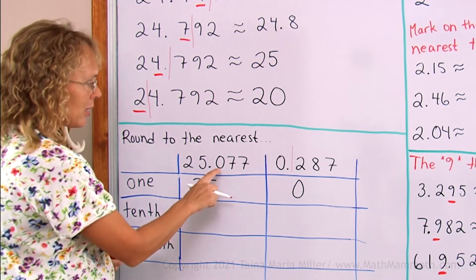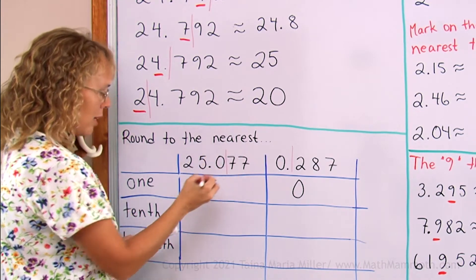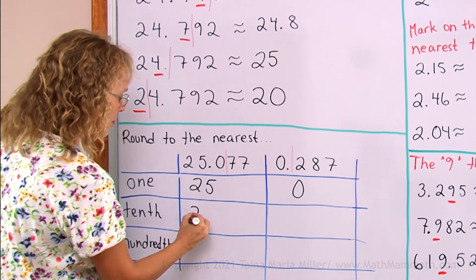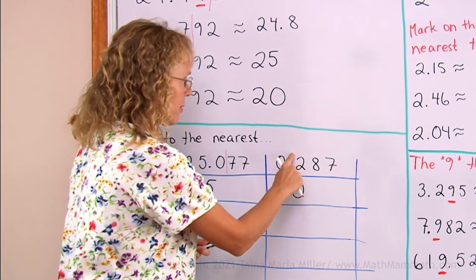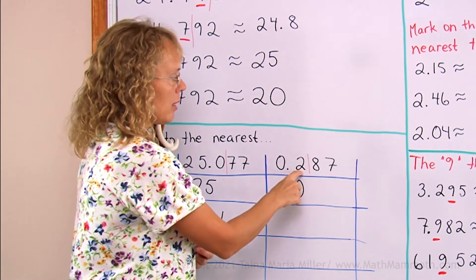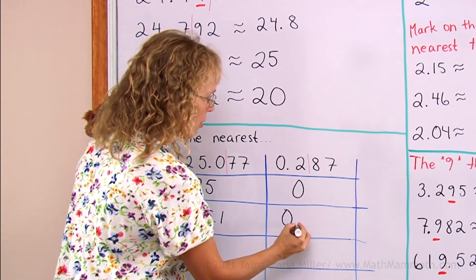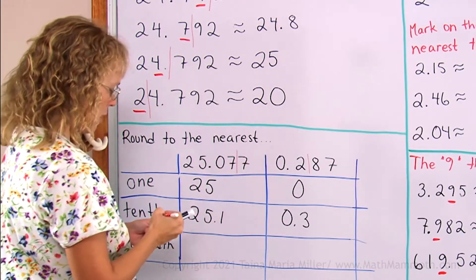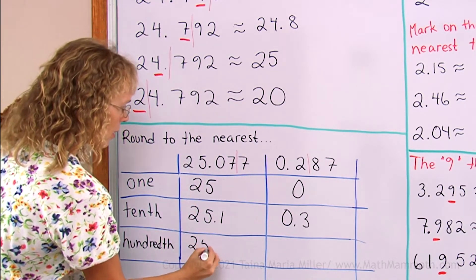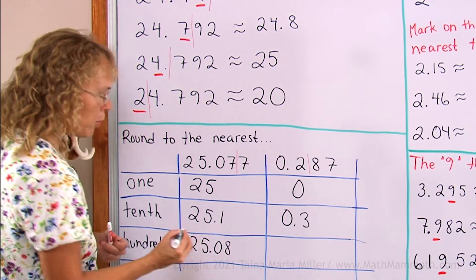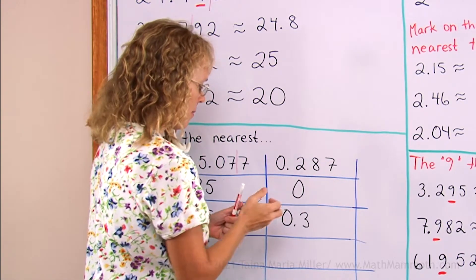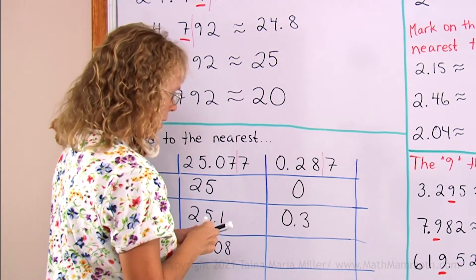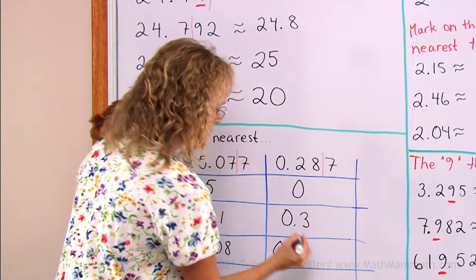Round to the nearest tenth next. This is the tenths place here. Put my line here. 7 means I need to round up, so this changes and is increased by 1 — we get 25.1. Over here, tenths place: 8 means I round up, so I get 0.3. Then to the nearest hundredth: 7 means I round up, so this just changes by 1 and we get 25.08. And over here, rounding to this place: 7 means I round up, so 8 changes to 9 — you get 0.29, or 29 hundredths.